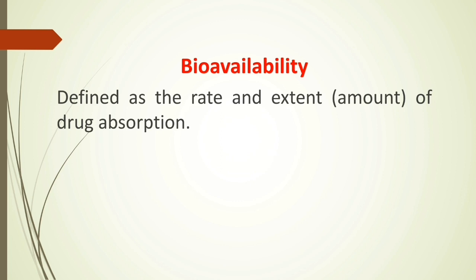Another important point is bioavailability. Bioavailability is defined as the rate and extent of drug absorption — that means the rate and extent of drug that reaches systemic circulation. We always say that the intravenous route, one of the parenteral routes, has 100% bioavailability. When we administer a drug through the intravenous route, we are administering it directly into the systemic circulation or into the blood, so the drug reaches fully and completely into the systemic circulation — hence 100% bioavailability.